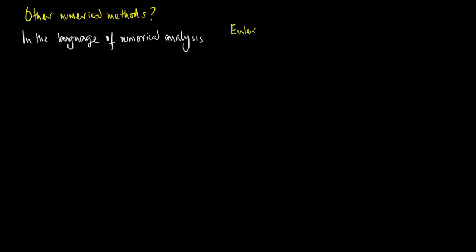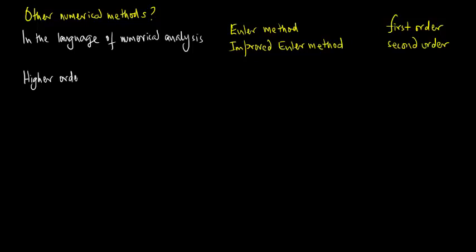Are there other numerical methods? In the language of numerical analysis, the Euler method is a first order method and the improved Euler method is a second order method. Higher order methods have been devised in the literature but they involve additional computations.